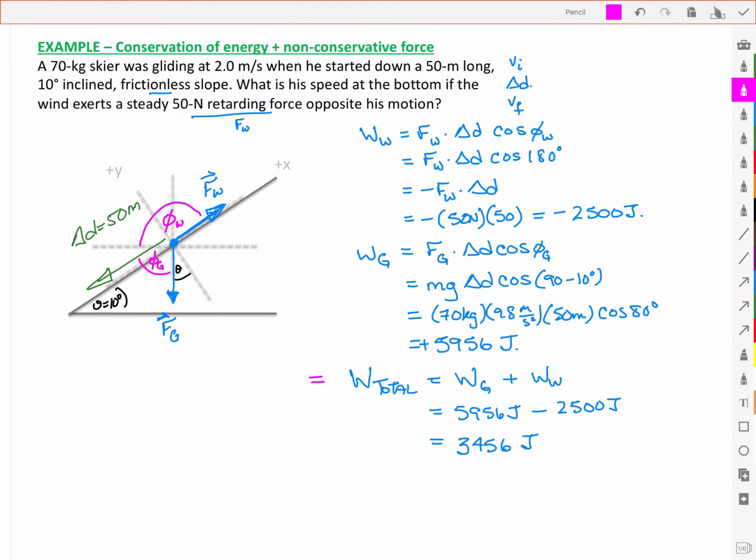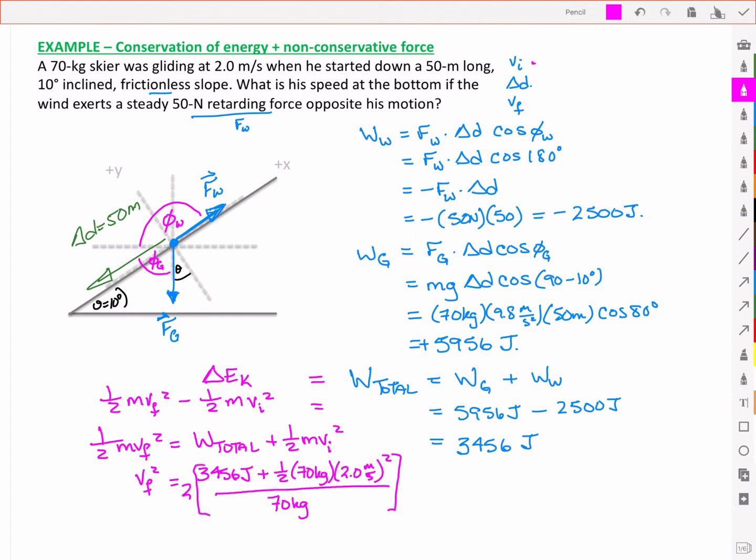And so it's that total work that then goes into my change in kinetic energy. And so one half mVF squared is then equal to my total work plus my initial kinetic energy that I had because it gives me the difference. So I've taken it to the other side and then I can solve for VF squared. So one of the unique parts is that I'm starting with an initial velocity and I need to account for that. I then have a total work that was 3,456 joules and I'm going to add the kinetic energy that I started with. So I've got two times my work total plus my initial kinetic energy all divided by my mass.